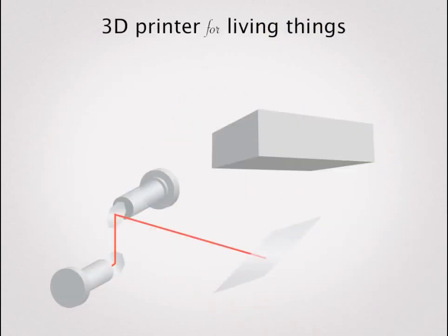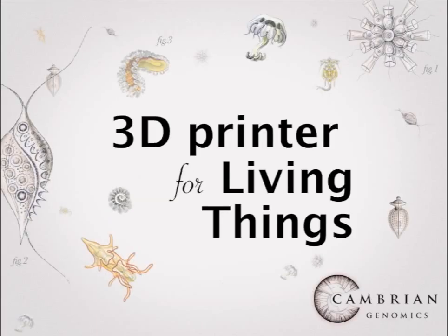Cambrian Genomics, Inc. is building a DNA laser printing fab in San Francisco, California. More information at CambrianGenomics.com.